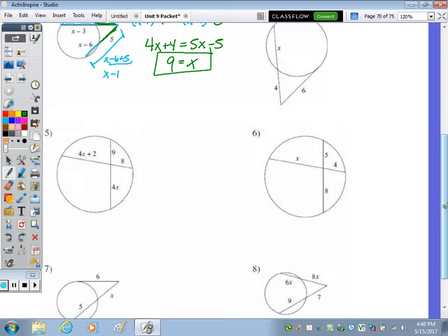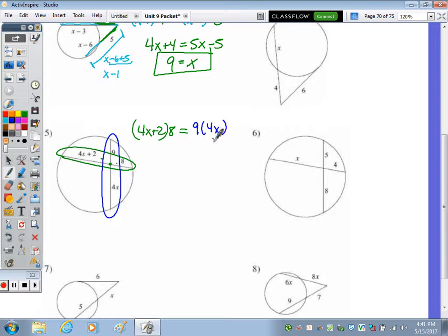For two chords, remember you take, they intersect here, you take one chord, multiply those, so this times this, so 4x plus 2 times 8, equals the product of the segments of the other chord. So that would be 9 times 4x. 9 times 4 is 36, so 36x equals 8 times 4x is 32x, 8 times 2 is 16. Subtracting 32x from 36, we end up with 4x, divide by 4, and x is 4.